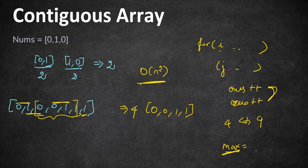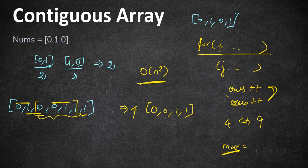So how do we approach this optimally? Using a single loop won't work because we need equal numbers of ones and zeros. In a subarray like 0,1,0,1 alternating, you cannot simply increment counts by switching between zeros and ones — we can't find where it starts and where it ends. We need a better solution.